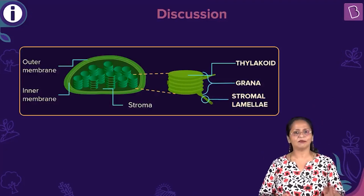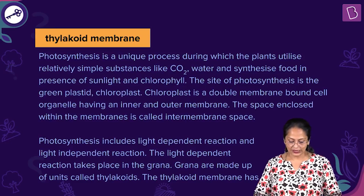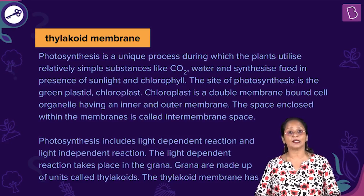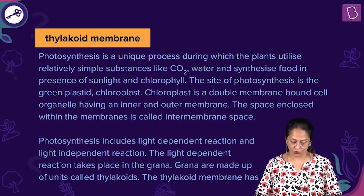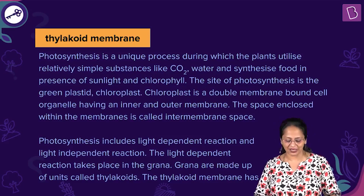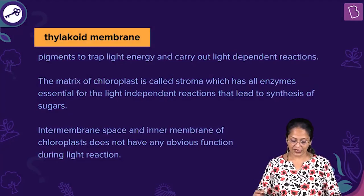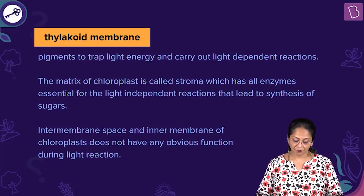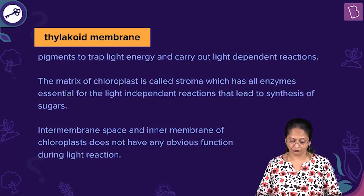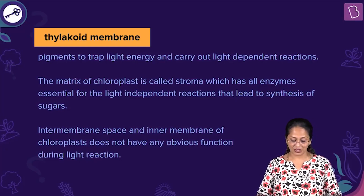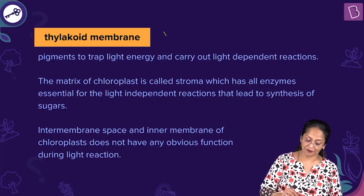Photosynthesis is a unique process during which plants utilize relatively simple substances like carbon dioxide and water to synthesize food in the presence of sunlight and chlorophyll. The site of photosynthesis is the chloroplast, a double membrane-bound cell organelle. The light-dependent reaction takes place in the grana, which are made up of thylakoids. The thylakoid membrane has pigments to trap light energy and carry out light-dependent reactions. The matrix of the chloroplast, the stroma, has enzymes for light-independent reactions. The intermembrane space and inner membrane do not have any obvious function during the light reaction.